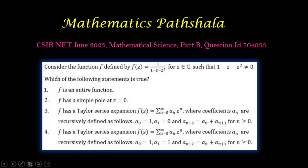The problem is given as: consider the function f defined by f(z) = 1/(1 - z - z²) for z belongs to the set of complex numbers such that 1 - z - z² is not equal to zero. That is, the denominator of this function is not equal to zero. So which of the following statements is true?